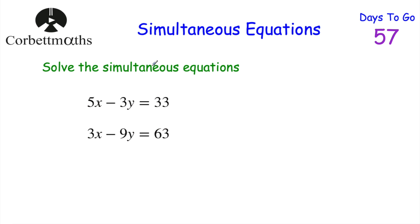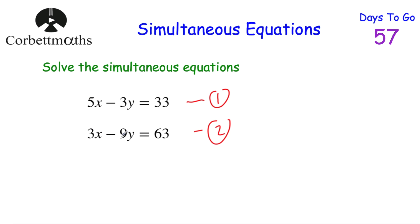Let's have a look at another simultaneous equations question. Feel free to pause the video to try this one yourself. We've got 5x − 3y = 33 and 3x − 9y = 63, and we want to solve these. I'll number them 1 and 2 and try to cancel one of the letters. I'm going to multiply the top equation by 3, because that gives me −9y — which matches the −9y already in equation 2.